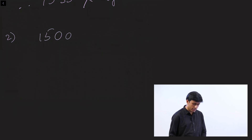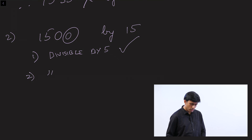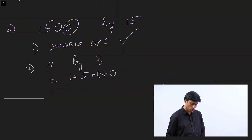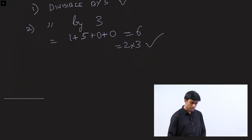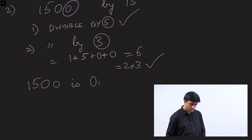Let's take another example: 1,500. Is this number divisible by 15? First, is it divisible by 5? Yes, because it ends in 0. Divisible by 3? Let's see: 1 plus 5 plus 0 plus 0 gives you 6, which is 2 into 3, so it is a multiple of 3 and divisible by 3. Since it is divisible by both 5 and 3, we can say 1,500 is divisible by 15.